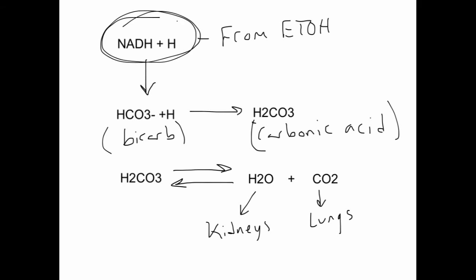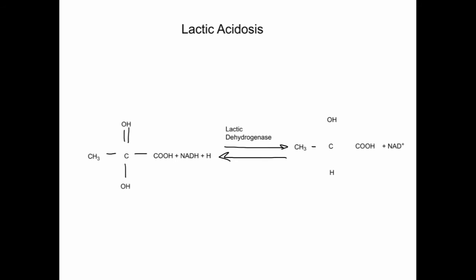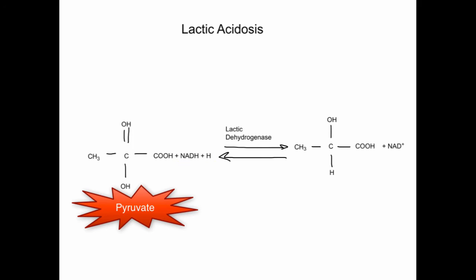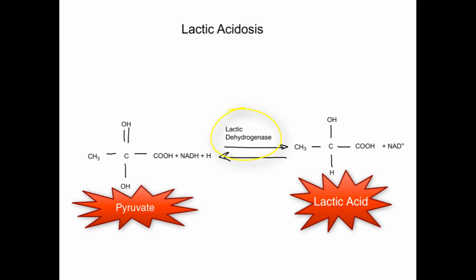Because of excess acetyl-CoA and inhibition of the Krebs cycle, lactic acid conversion is a more favorable pathway for energy. The excess NADH and hydrogen ions are used to convert pyruvate into lactic acid by way of the enzyme lactate dehydrogenase. Lactic acid serves as an energy source but also contributes to metabolic acidosis.